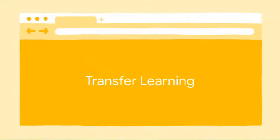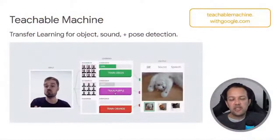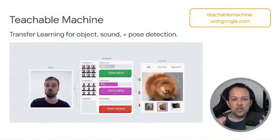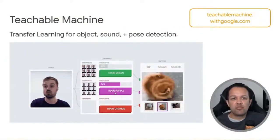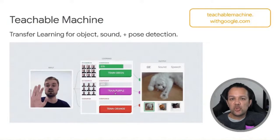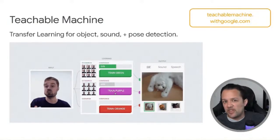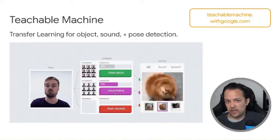The second way to use TensorFlow.js is via transfer learning — retraining existing models to work with your own custom data. If you're familiar with machine learning, you can do this programmatically in code, but today I want to show you two easier ways to get started. First up is Teachable Machine — super easy to use, running entirely in the web browser, both for training and for inference, which is the act of using the model to classify something.